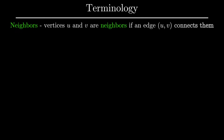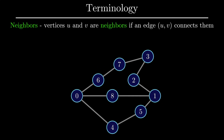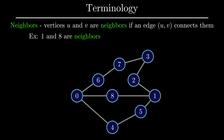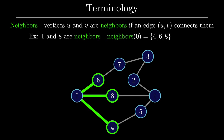Let's now define some important terminology that you'll see over and over again when talking about graphs. The first important term is the concept of neighbors in a graph. Formally, two vertices are neighbors if an edge connects them. Vertices 1 and 8 of this graph are neighbors since they are connected by an edge. One thing that we will often query a graph for is all neighbors of a particular vertex. For example, if we were to ask for all the neighbors of node 0, the result would be the following set of three nodes: nodes 4, 6, and 8.